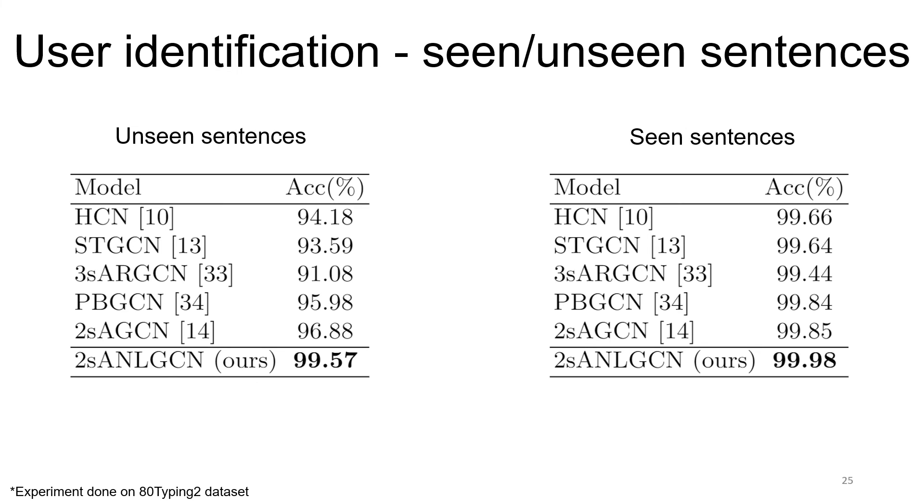On the right table, we present a different use case, where the model needs to infer on sentences it saw during training, but different videos of them, that is, re-identification tasks. Clearly, this task is easier than the previous one.